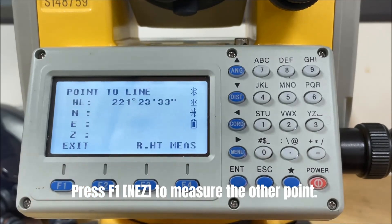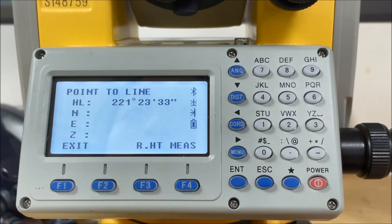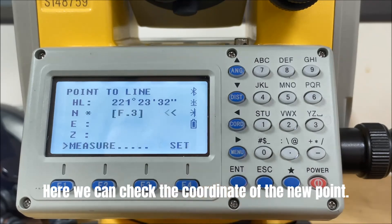Press F1 and EZ to measure the other point under the current coordinate system. Here we can check the coordinate of the new point.